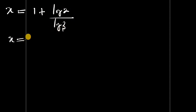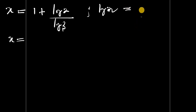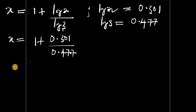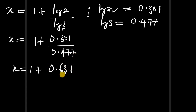We can now use a calculator. Log(2) equals 0.301 to three decimal places, and log(3) equals 0.477 to three decimal places. So x = 1 + 0.301 / 0.477. Dividing gives 0.301 / 0.477 = 0.631, also to three decimal places.